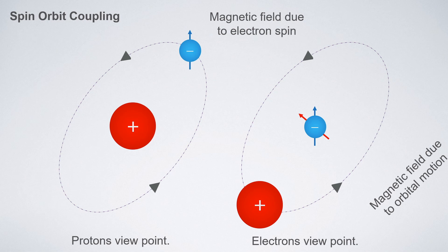There will be interaction between these two magnetic fields: either they will be in the same direction, called 'with the field' orientation, or in the opposite direction, called 'against the field.' That means the energy of the electron is split into two parts — one with the field (lower binding energy) and one against the field (higher binding energy).